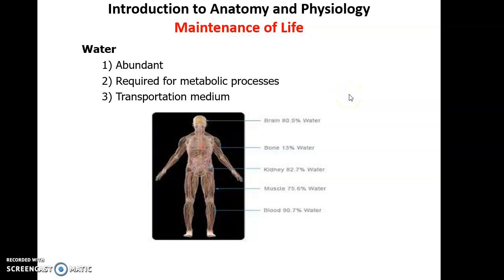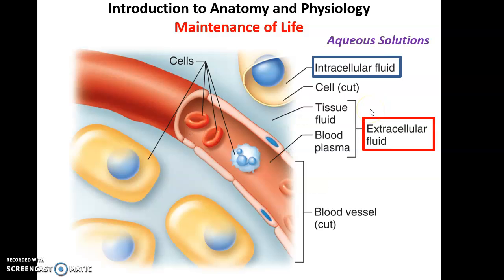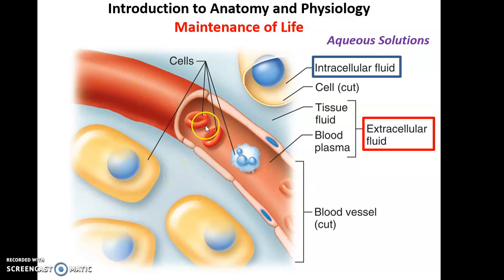Water can be found pretty much everywhere in the body. There are intracellular fluids — aqueous solutions within our cells. There are extracellular fluids surrounding the cells, sometimes called interstitial fluids. And then there is the fluid in our blood vessels — blood plasma — again 90 percent water. So we have fluids in our blood vessels, surrounding our cells, and within our cells, and all of these are aqueous watery solutions.